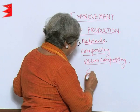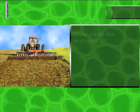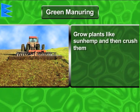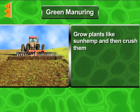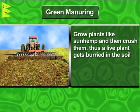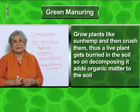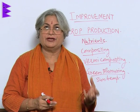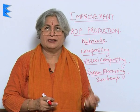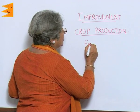A third method is green manuring. In green manuring, we grow plants like sunn hemp and then crush them by plowing. The live plant gets buried in the soil, and when it decomposes it adds organic matter to the soil. In this way, we can improve the nutrient content of our soil by adding manure produced through composting, vermicomposting, or green manuring.